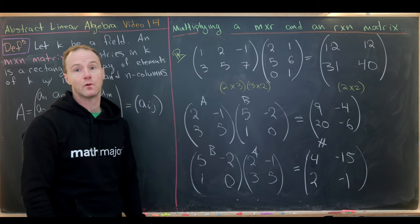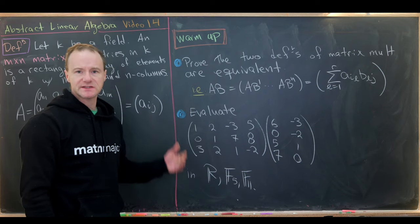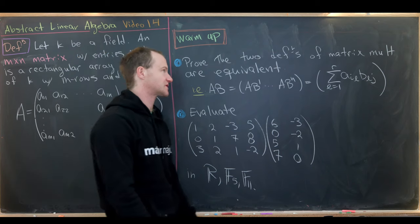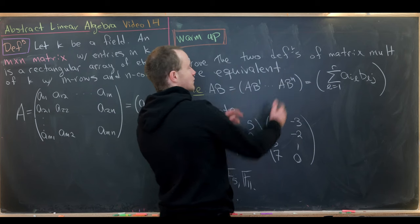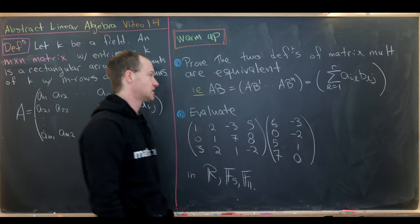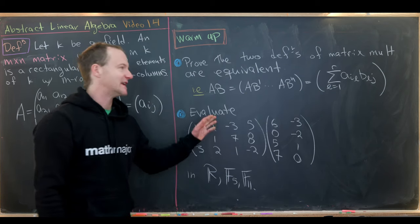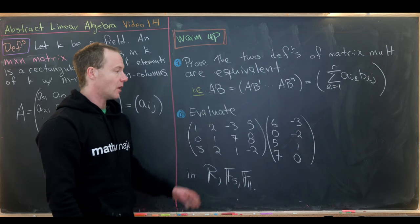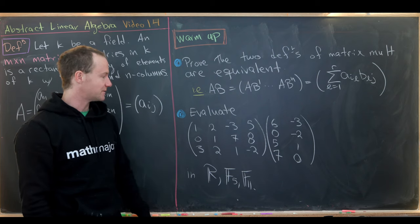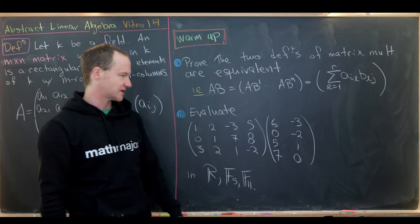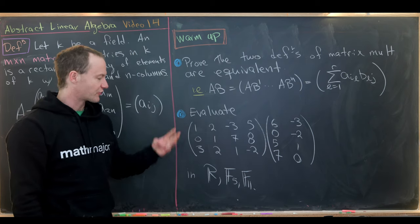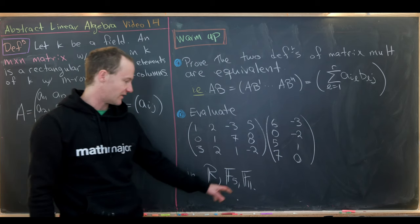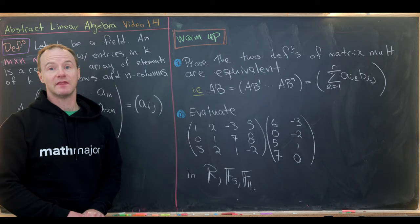Here are two warmup problems. The first is to prove that the two definitions of matrix multiplication are equivalent — that the column-based definition using matrix-vector multiplication is the same as the entry-formula definition. The second is more computational: multiply a 3 by 4 matrix by a 4 by 2 matrix, doing it three times — once over R, once over F5, and once over F11. And that's a good place to stop.